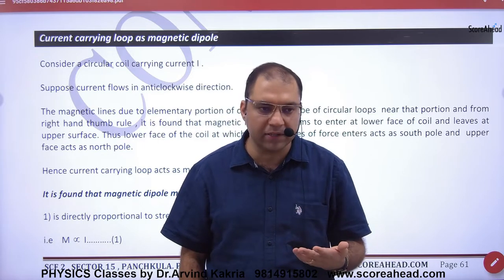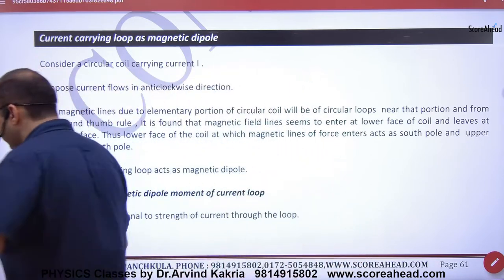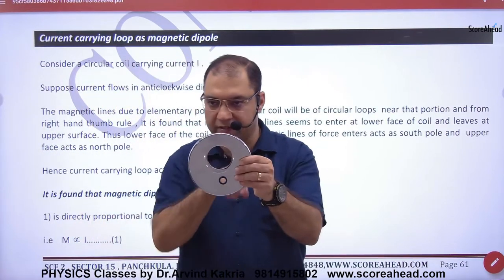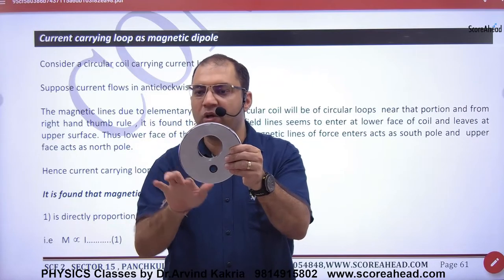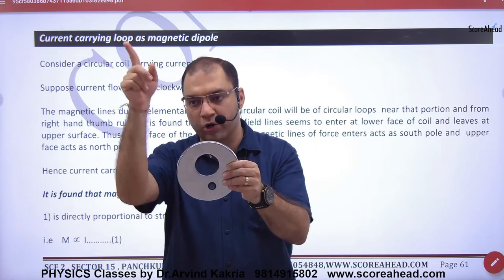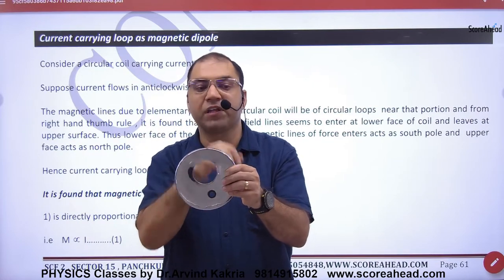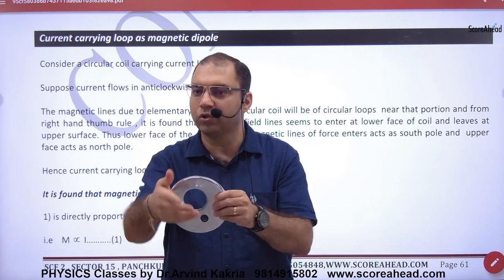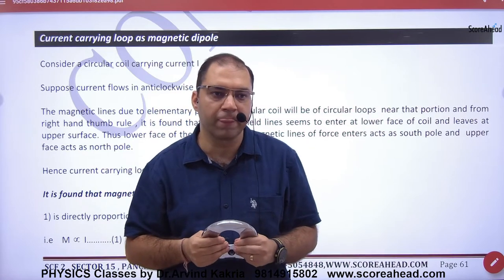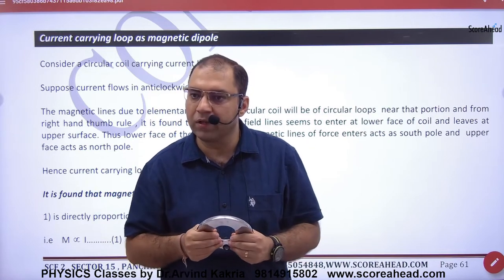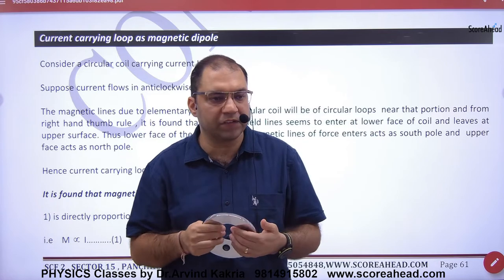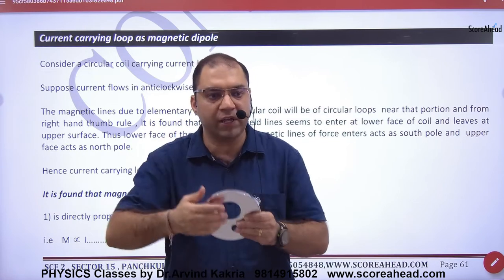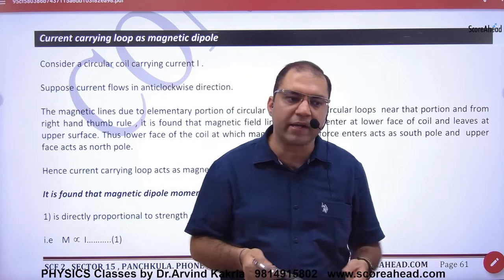How do we decide the poles? If you have a current-carrying loop where the current is clockwise, then that end acts like a south pole. If the current is anticlockwise, that end is north. So the south end is clockwise, and the north end is anticlockwise. If the direction changes — if it becomes anticlockwise — the pole changes to north. The poles are not fixed; they depend on the current direction.